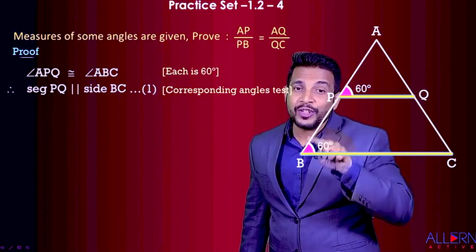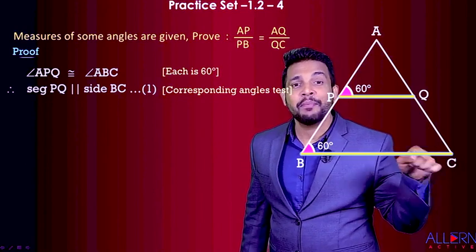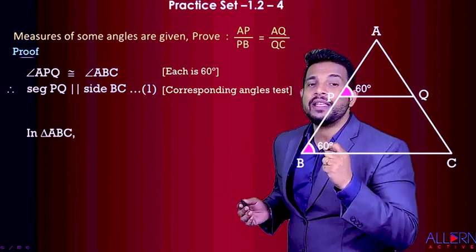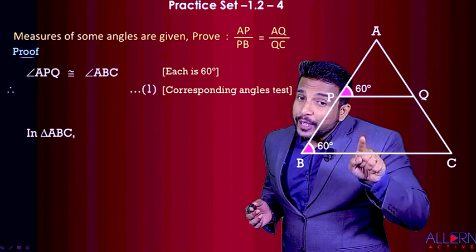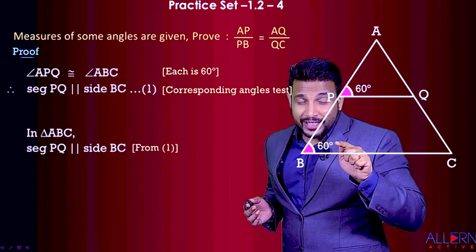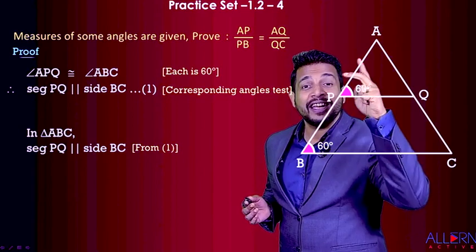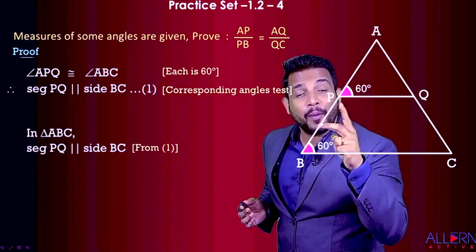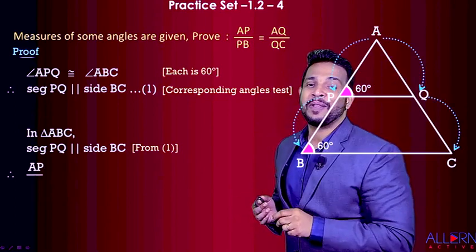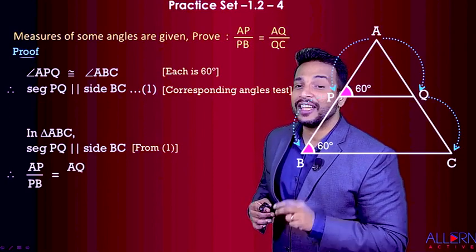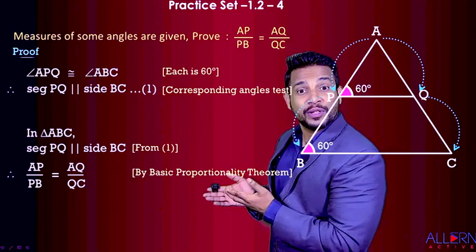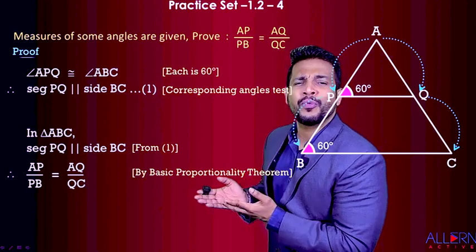Since we got these parallel lines, in triangle ABC we can apply the Basic Proportionality Theorem. So we write: in triangle ABC, segment PQ is parallel to BC (from result one). Therefore AP upon PB is equal to AQ upon QC, by the Basic Proportionality Theorem. And that is exactly what we were supposed to prove. Very simple!